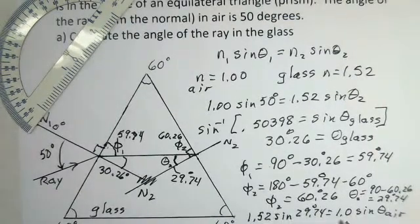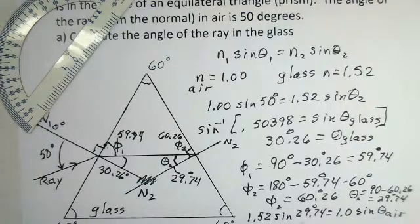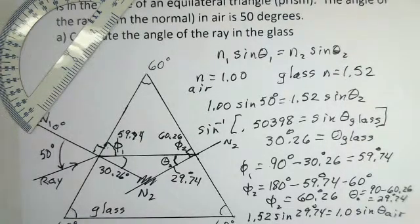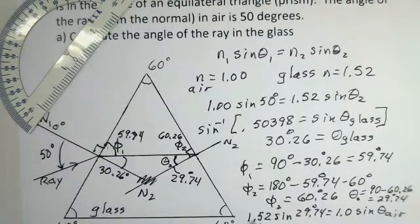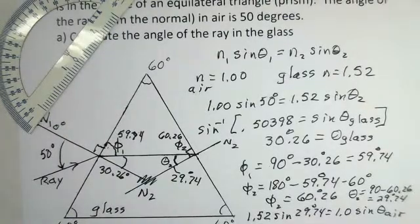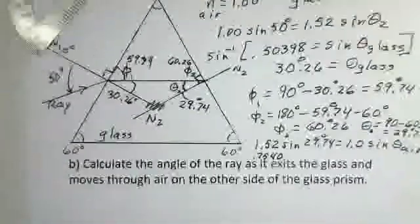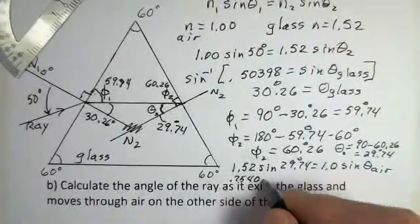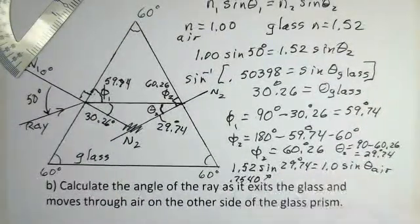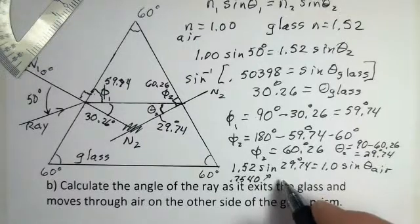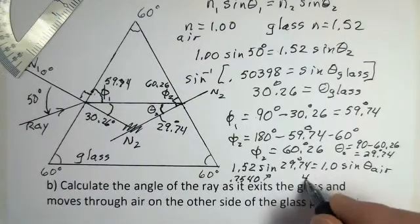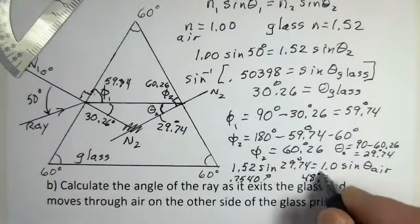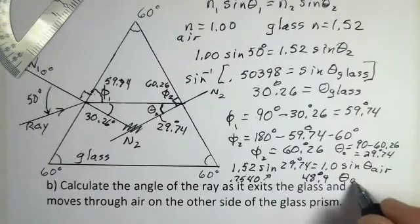And I came up with the angle in... maybe first temporarily when I did this calculation I got 0.7540. And I need to slide my paper up just a little bit here 0.7540 for this left side and taking inverse sine of that I have 48.9 degrees for the angle in the air.